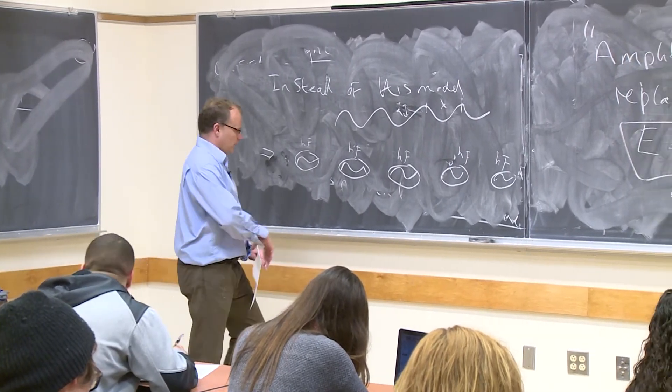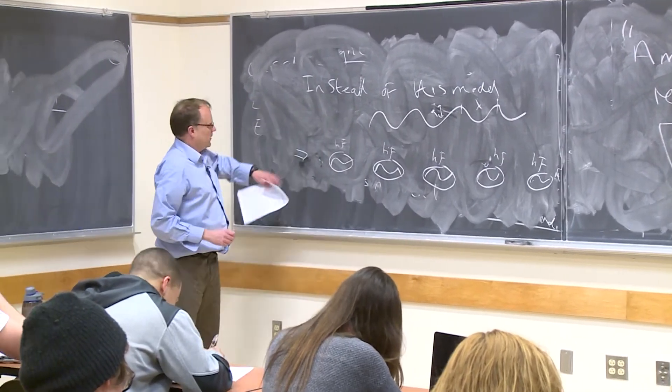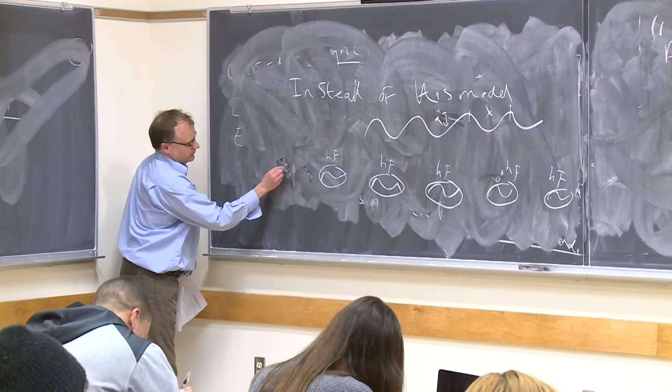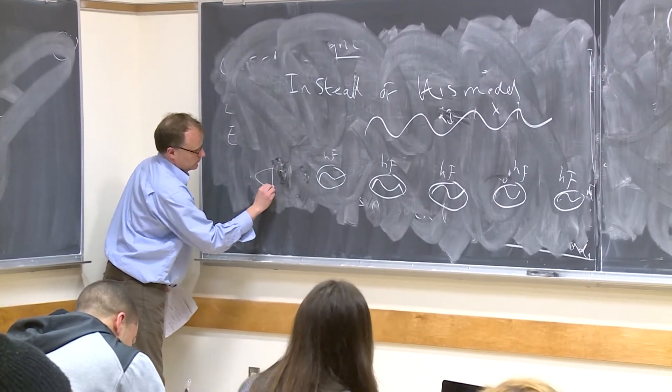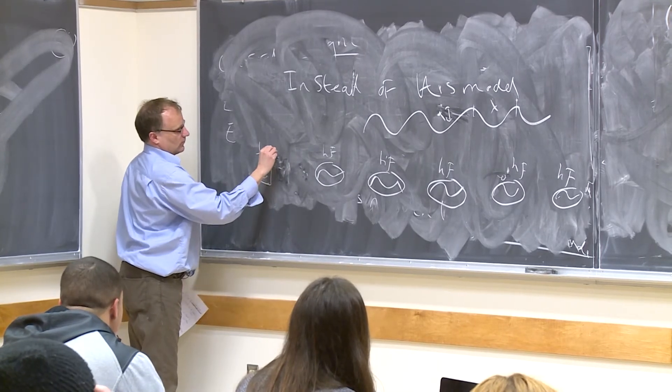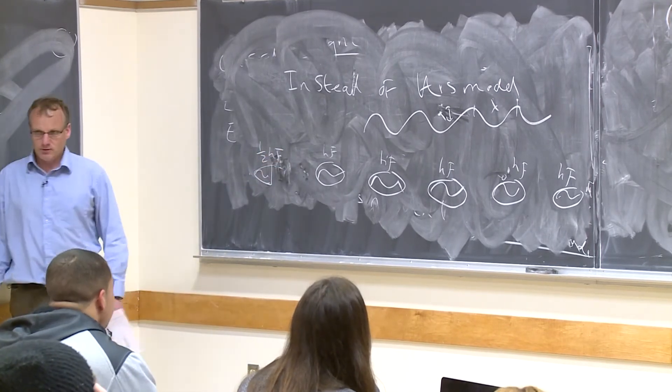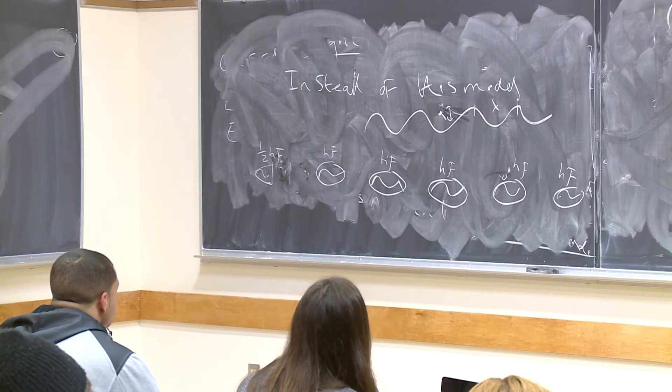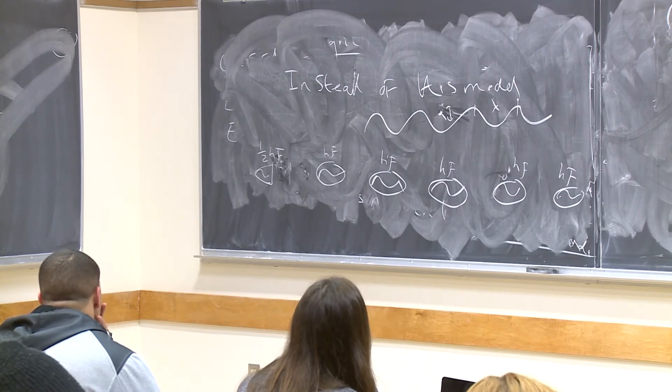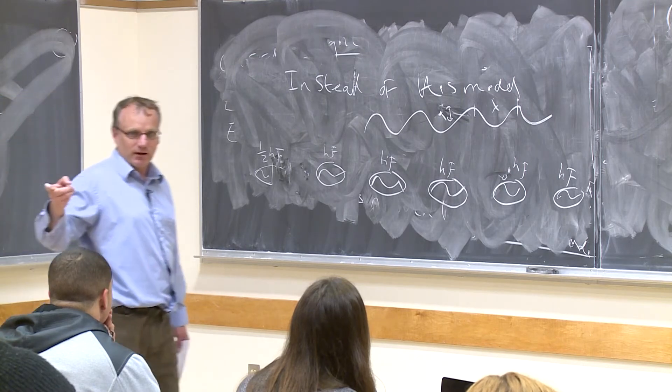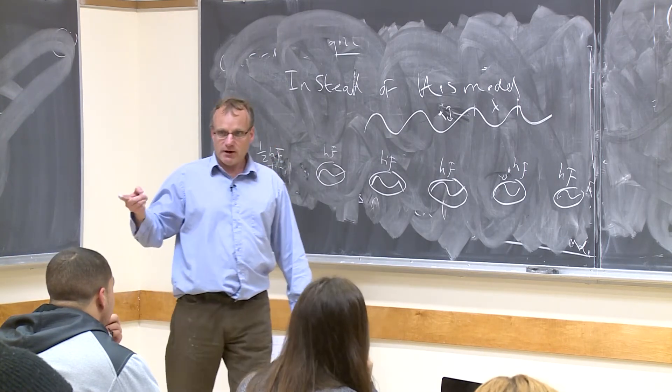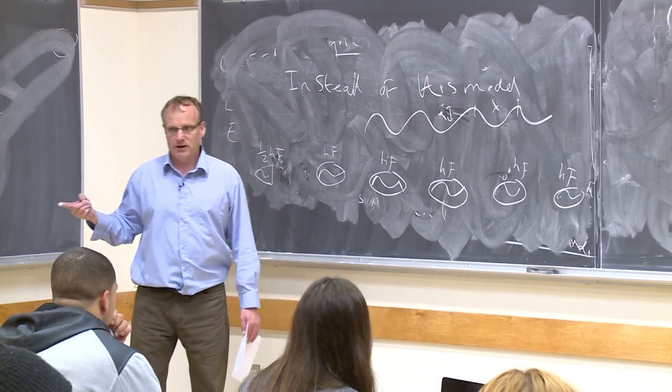Now, according to quantum mechanics, you can't have this. This is not allowed. You can't have half an H F. It's quantized. You have one, you have two, you have three, you have four, you have five, you have six, you have seven. That's what quantum mechanics means. This is why you have quantized electron orbitals in atoms.